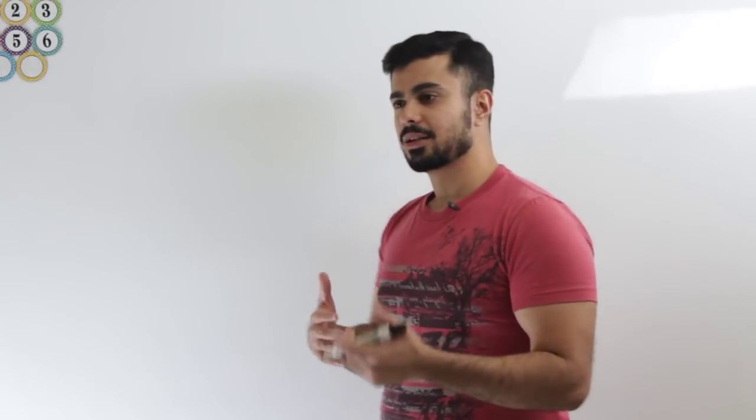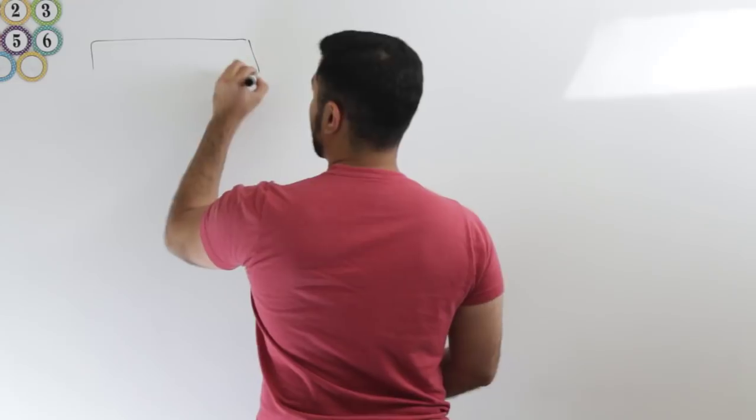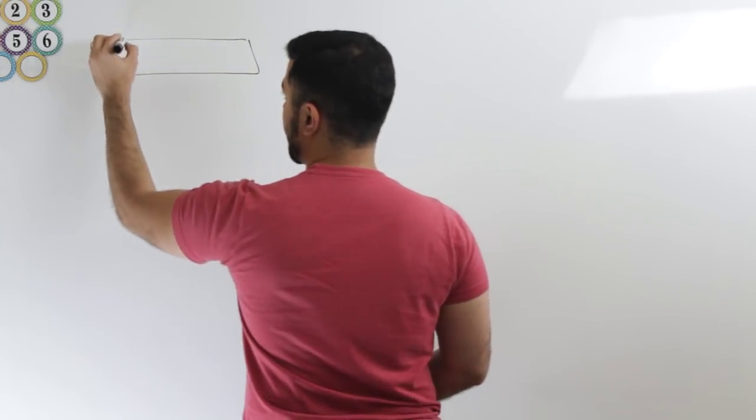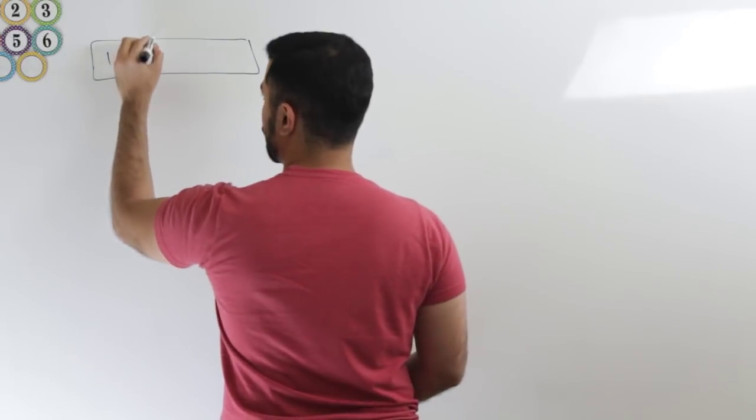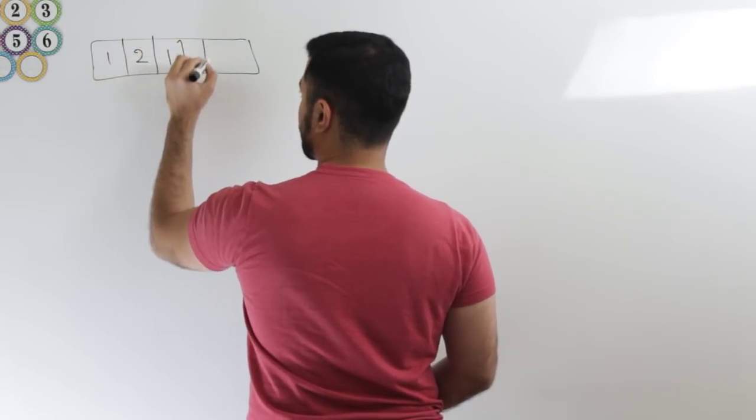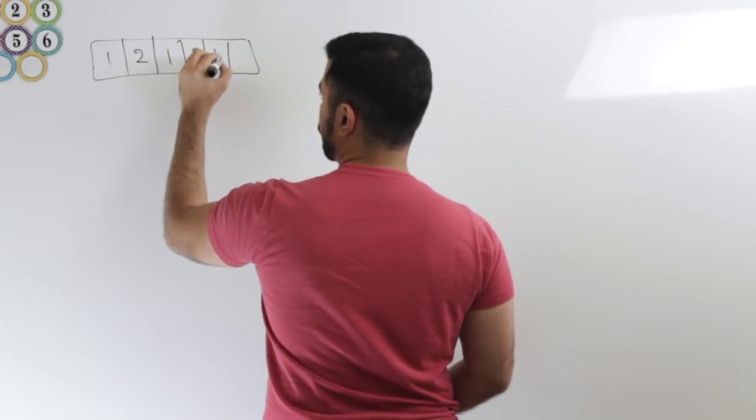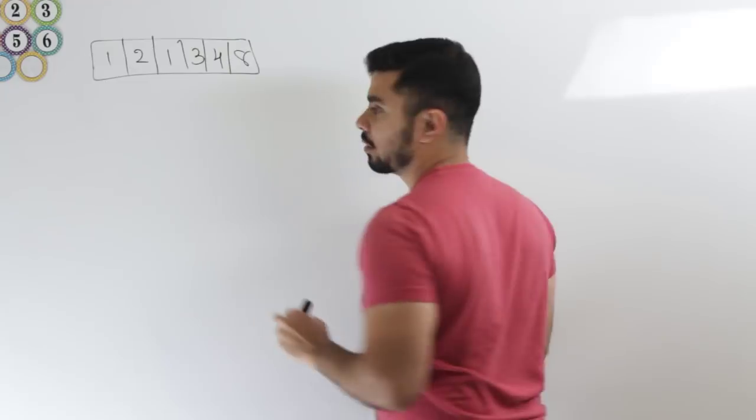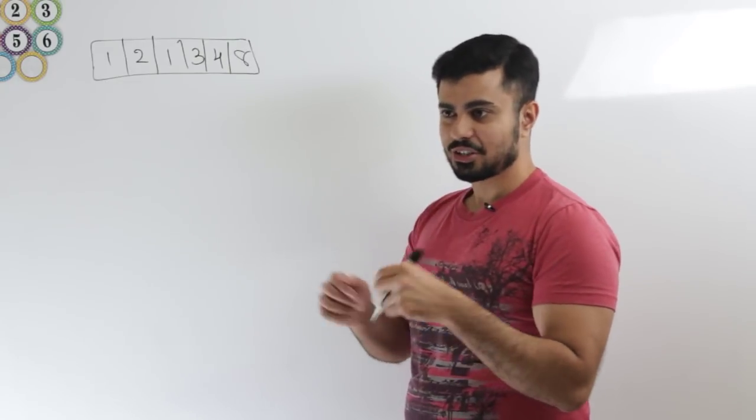Before I get into it, at the end I'll tell you which problem I'm going to cover next week so you can get a head start and try it out yourself. Let's get right into it. Let's go through an example just to understand this a little better. So I'll pick an easy example that has a cycle. Let's say we have an array and the value of the first index is 1, then it goes to 2, then it goes back to 1, it goes to 3, maybe it goes to 4, and then it goes to 8.